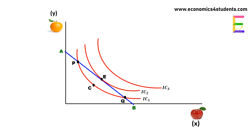Points P and Q are not optimal. If the consumer moves from P or Q towards point E along the budget line, he can move to a higher indifference curve IC2 by spending the same amount of income. E is the point where the consumer gets maximum satisfaction with the given money income.